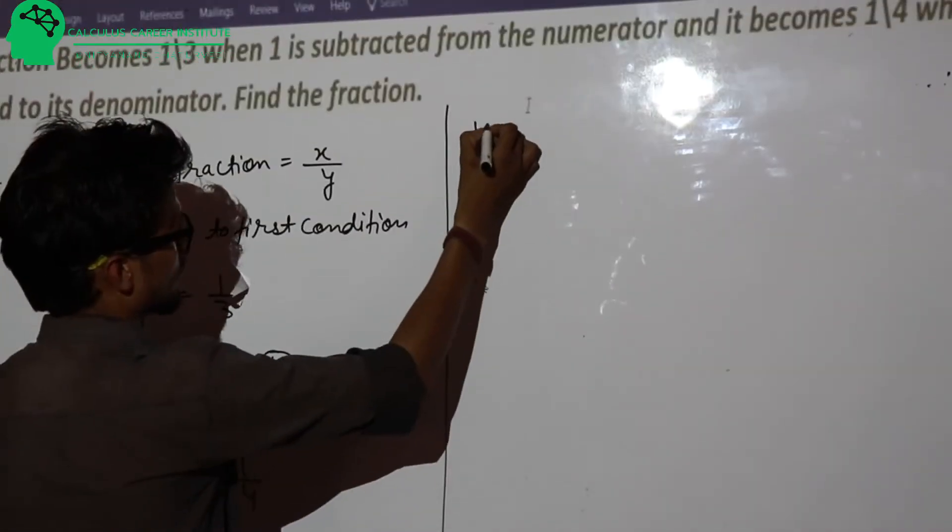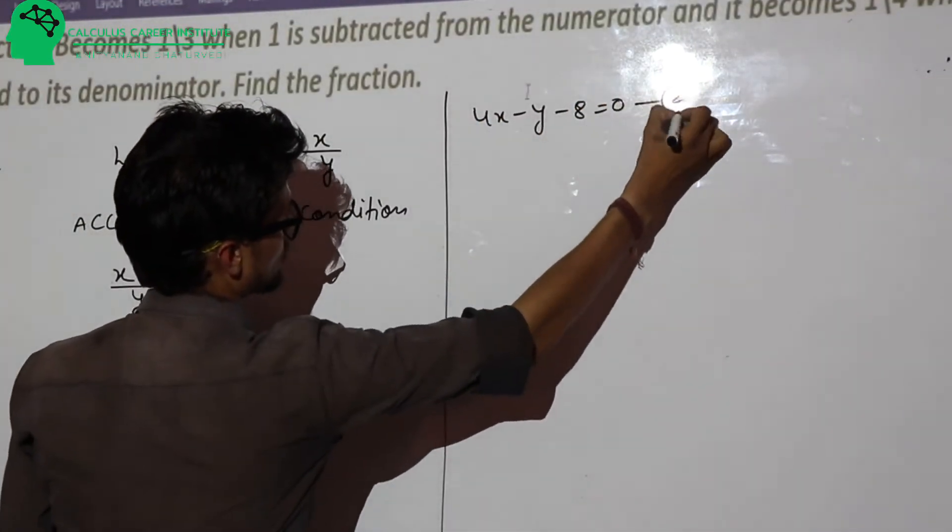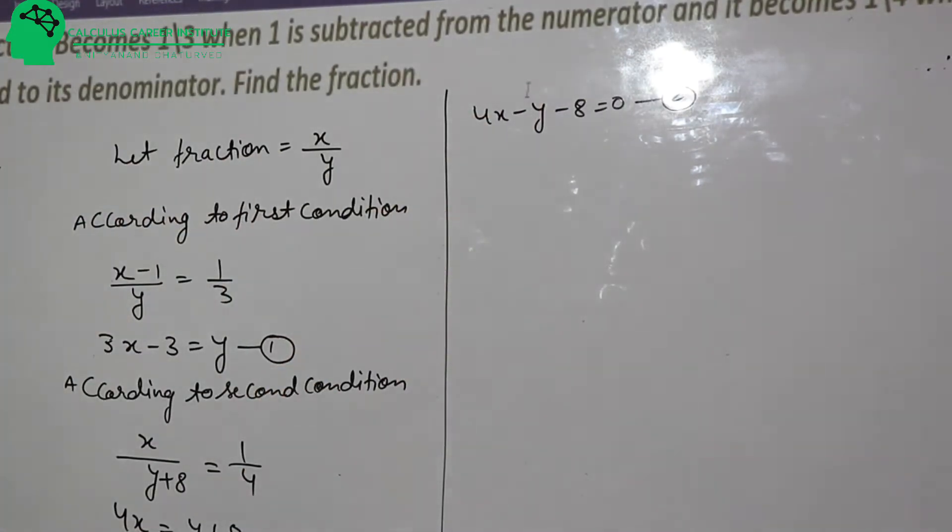We have to write this as 4x minus y minus 8 equal to 0. So, this is equation number 2.